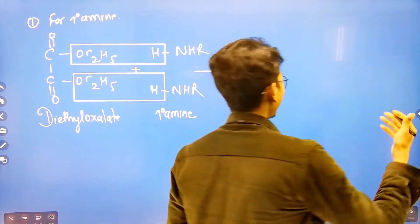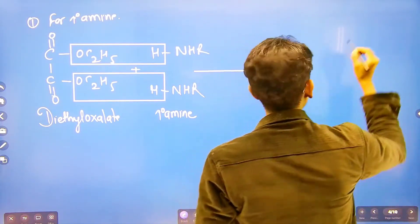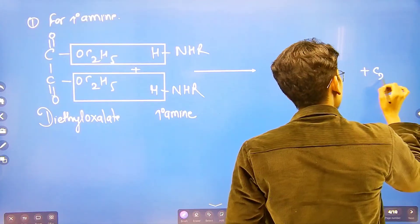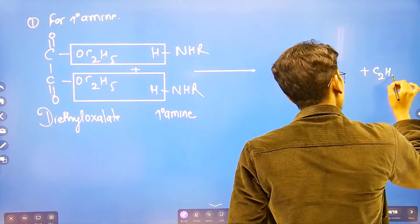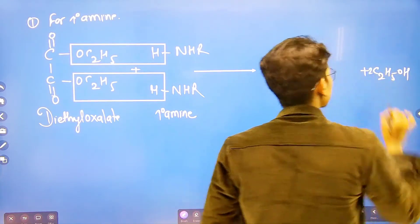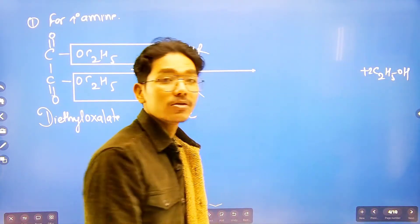All the problems are caused by the alcohol leaving. Now, C2H5OH — these are two molecules of alcohol that are released as byproducts of the reaction.